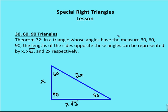Let's take a look at the first special right triangle, and that's a 30-60-90 triangle. Theorem 72 says that in a triangle whose angles have the measure of 30-60-90, the lengths of the sides opposite these angles can be represented by x, x-root 3, and 2x, respectively. We always start with the side that's opposite the 30-degree angle, identify that as x, then the side opposite 60 degrees is x-root 3, and the side opposite 90 is 2x.